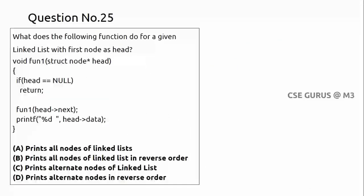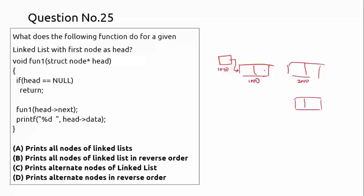Question 25 asks what a function does for a given linked list. In a linked list, the head node points to successive nodes, each containing data and a next pointer. For example: head→1000(data:10)→2000(data:20)→3000(data:30)→null. If head is null, there are no elements.